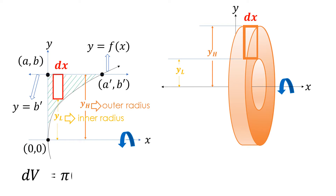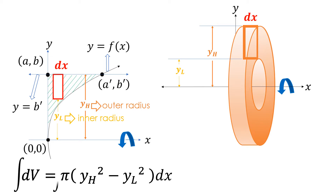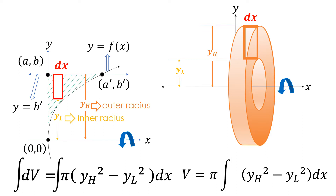Solving the volume of the circular ring or circular washer: the differential volume is equivalent to π times the quantity (yh² minus yl²) times dx. Integrating, we get V equal to π times the integral of (yh² minus yl²) dx. The lower limit is at 0, taken from the x-coordinate of the origin, and the upper limit is the x-coordinate of the point of intersection of the line and the curve y equal to f(x), which is a prime.